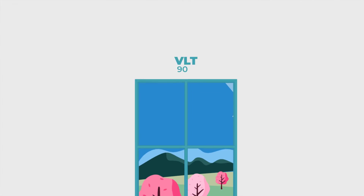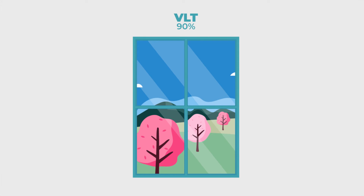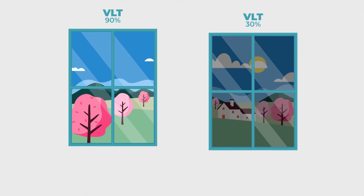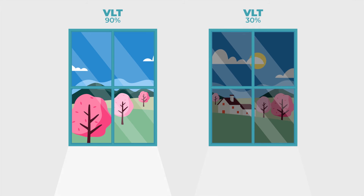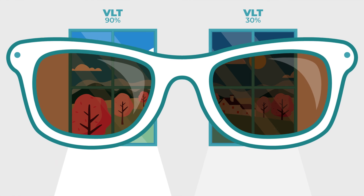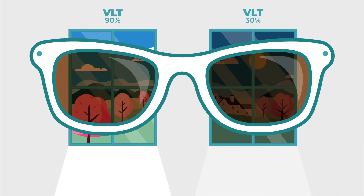Think of it like a window: clear glass has high VLT, allowing you to see everything outside, while tinted glass has lower VLT, reducing the intensity of sunlight and providing shade. The same principle applies to various optical equipment, such as laser safety eyewear and windows.